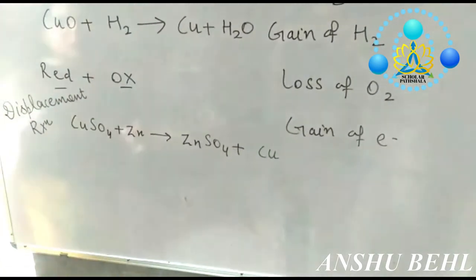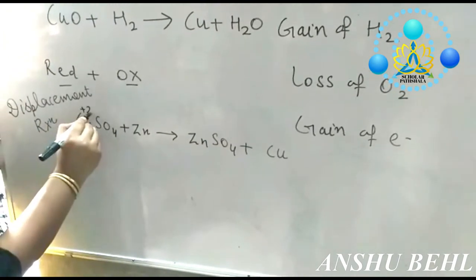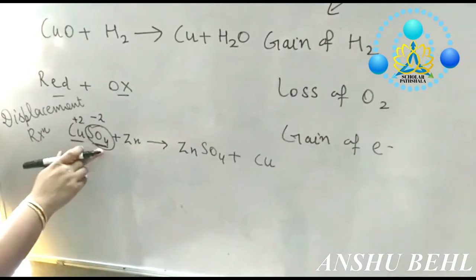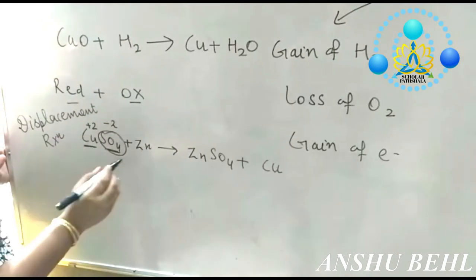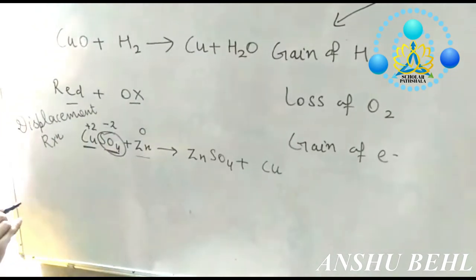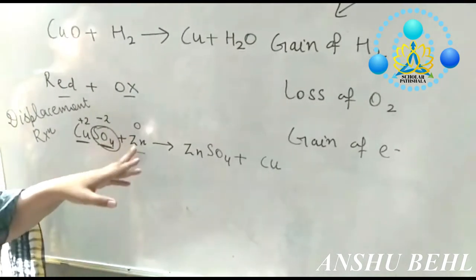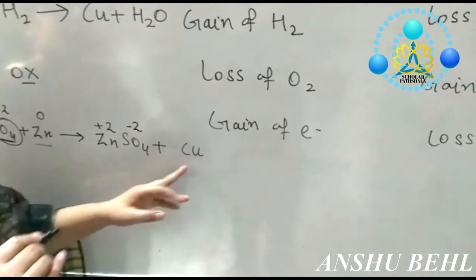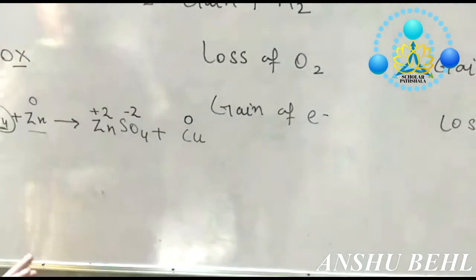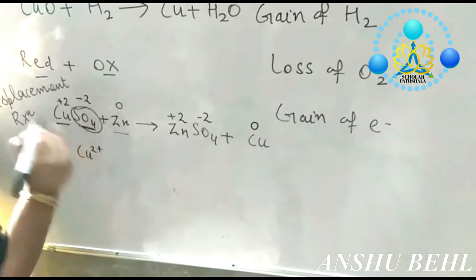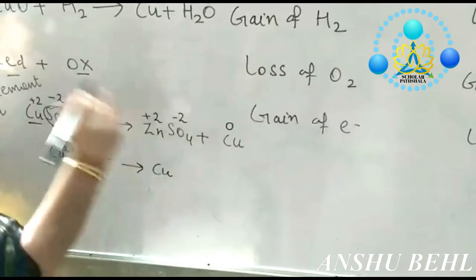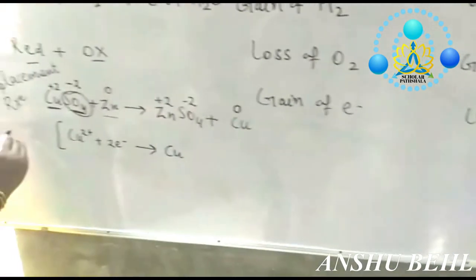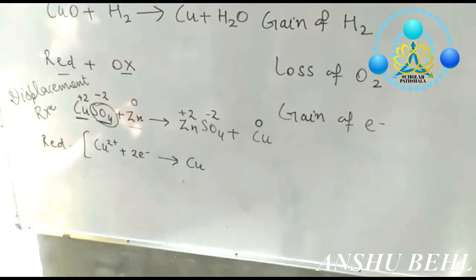In this reaction, copper is in the oxidation state of plus 2. Sulfate ion has a charge of minus 2, so copper has a charge of plus 2. Zinc metal is in oxidation state 0 — any metal in elemental form is taken as 0. In the product, zinc is zinc 2 positive and copper metal in elemental form is taken as 0. Copper 2 positive, after gain of 2 electrons, turns to copper — this is gain of electrons, which means reduction of copper is taking place.